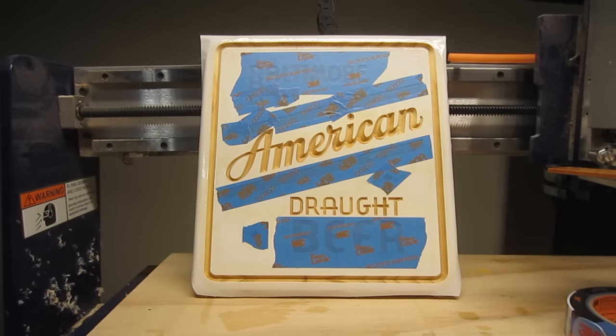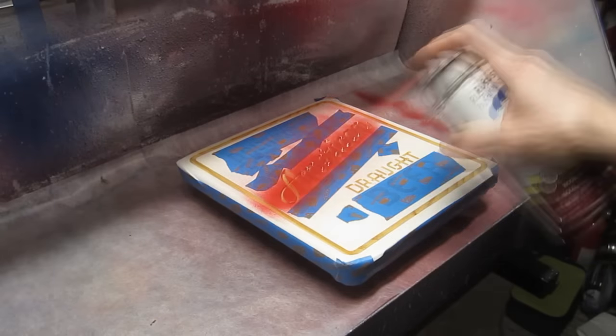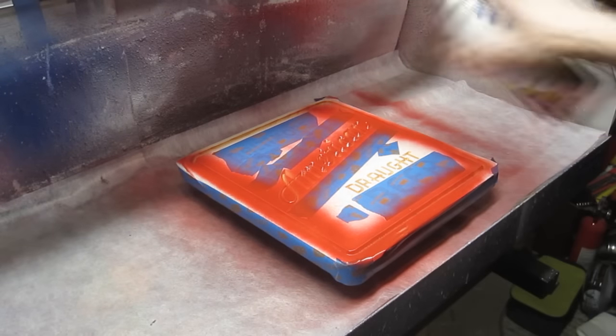This sign involves three different colors. Since I'm going to be spraying the paint, I need to cover the areas that receive a color other than the one currently being applied. I use quick-release blue painter's tape for this purpose. The order in which the colors are applied is somewhat arbitrary in this case.